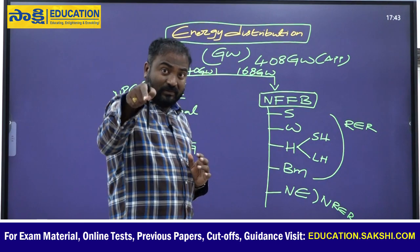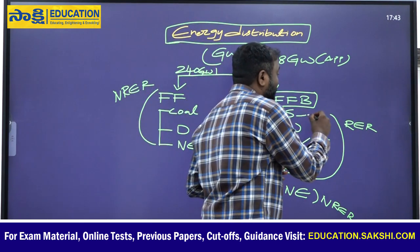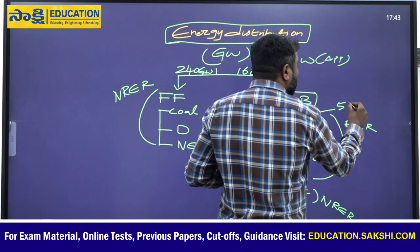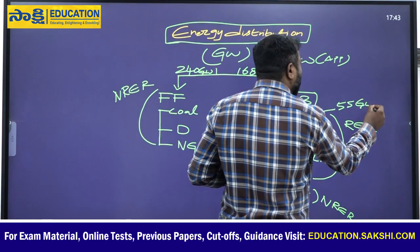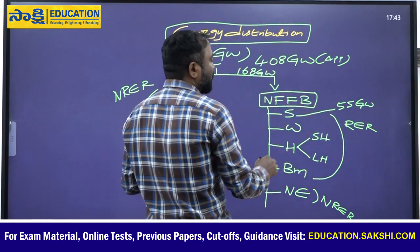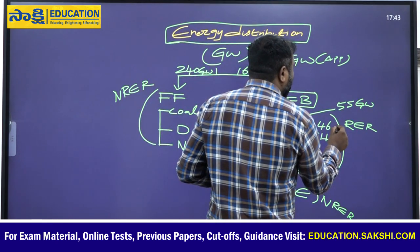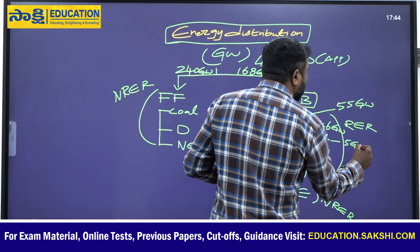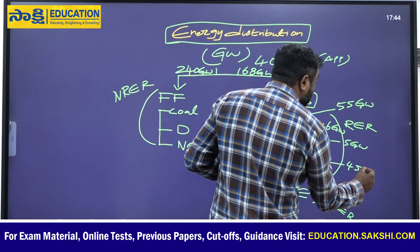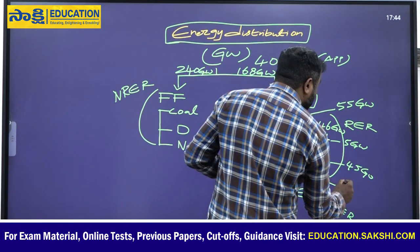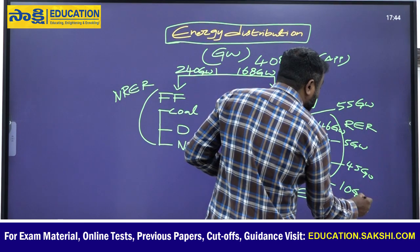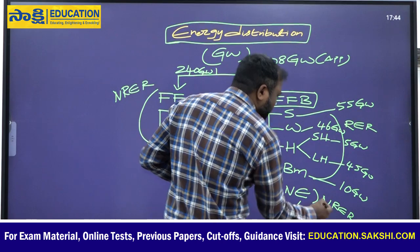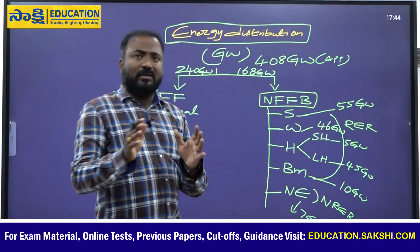Among non-fossil fuel based energy resources, solar energy leads with the majority share. Small hydro contributes around 5 gigawatts, large hydro around 45 gigawatts, and biomass approximately 10 gigawatts. India's current nuclear energy capacity is around 7 to 8 gigawatts.